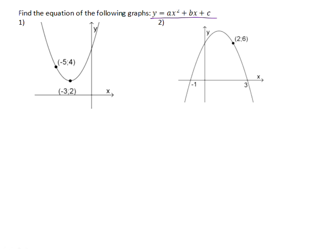If we start off with number 1, we can see that we've got the coordinates of the turning point, (-3, 2), and then we have the xy coordinate for another point that lies on the graph.